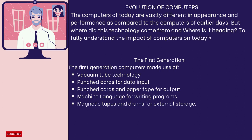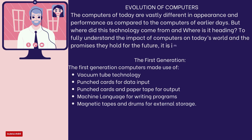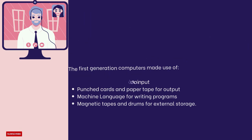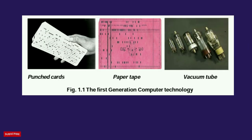The first generation computers made use of vacuum tube technology, punched cards for data input, punched cards and paper tape for output, machine language for writing programs, and magnetic tapes and drums for external storage.